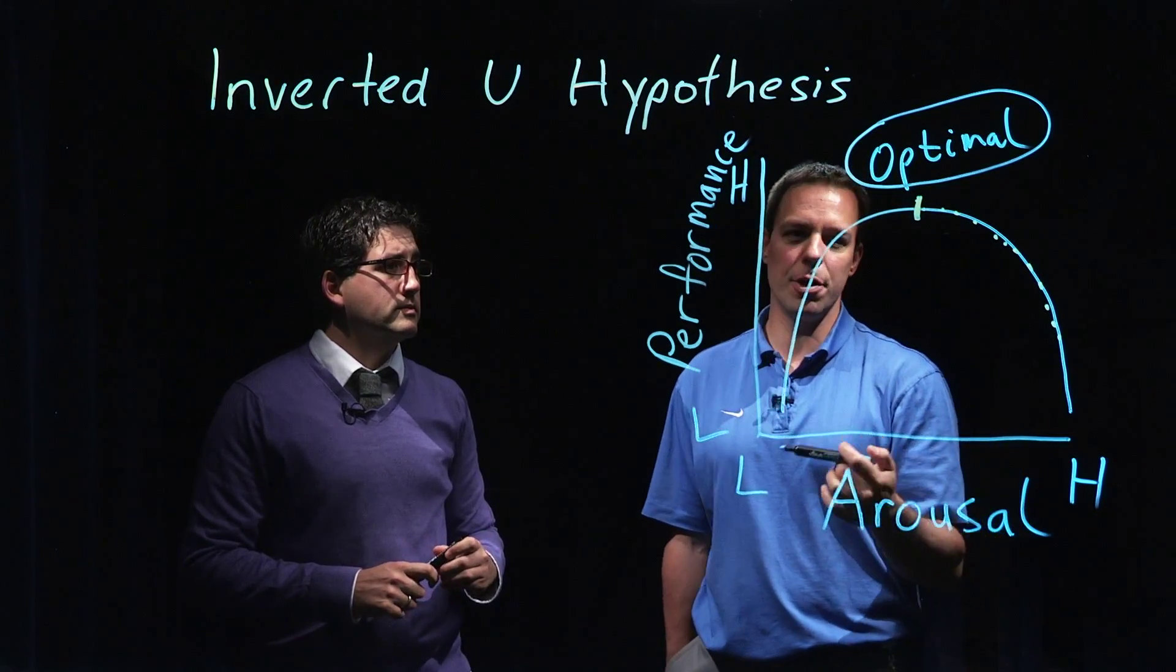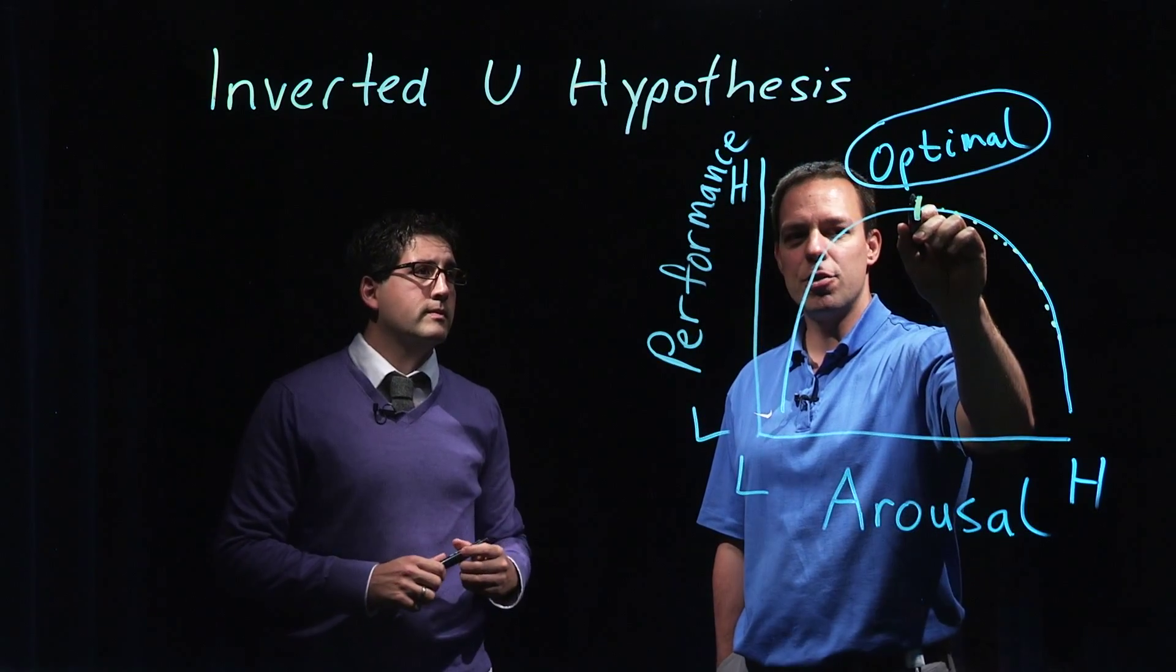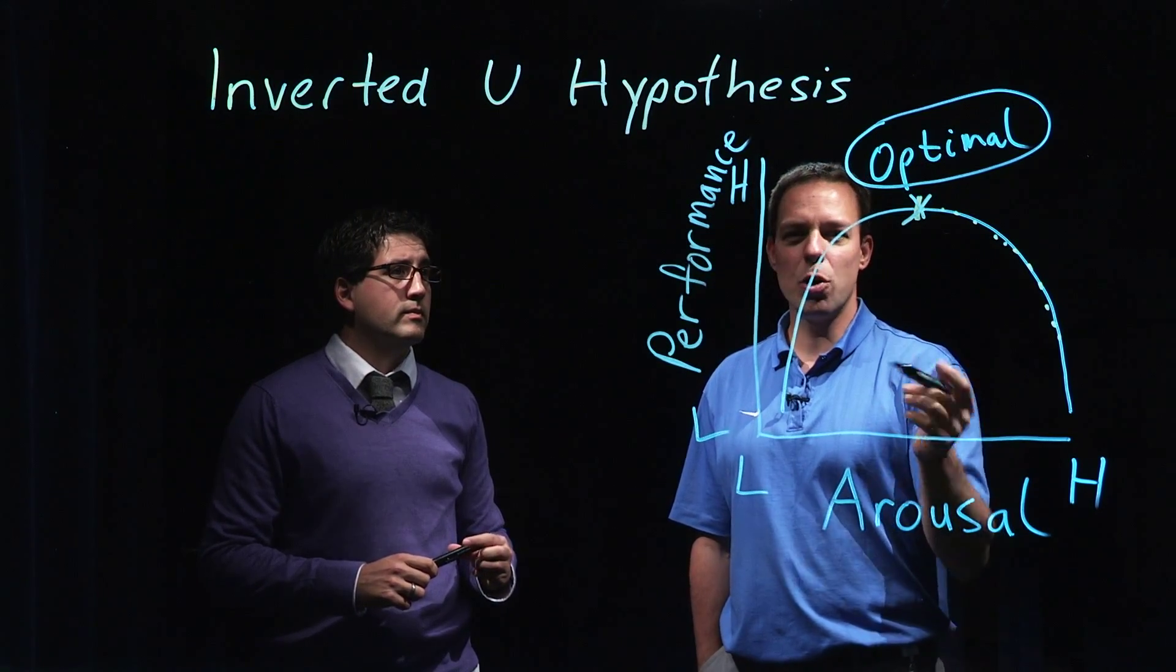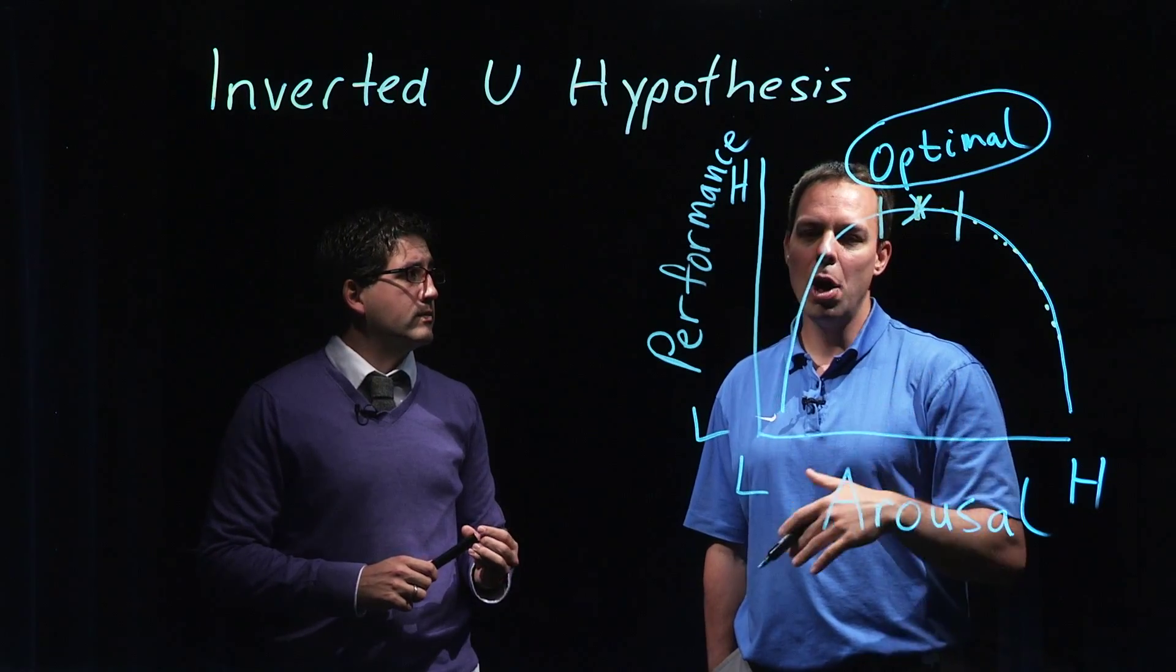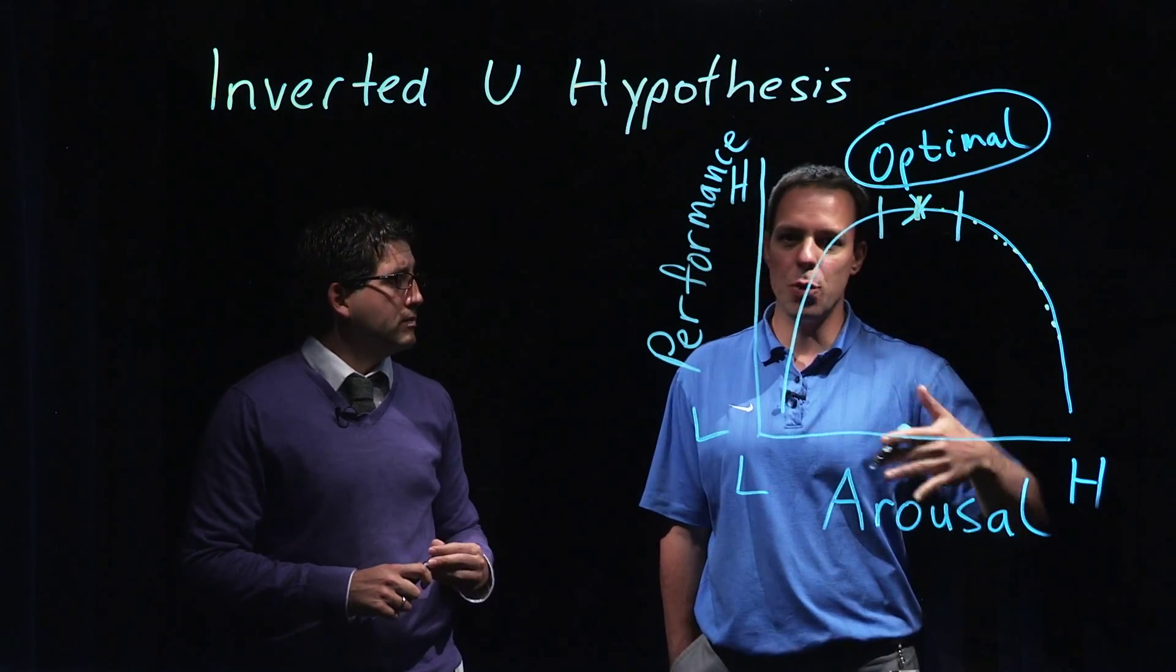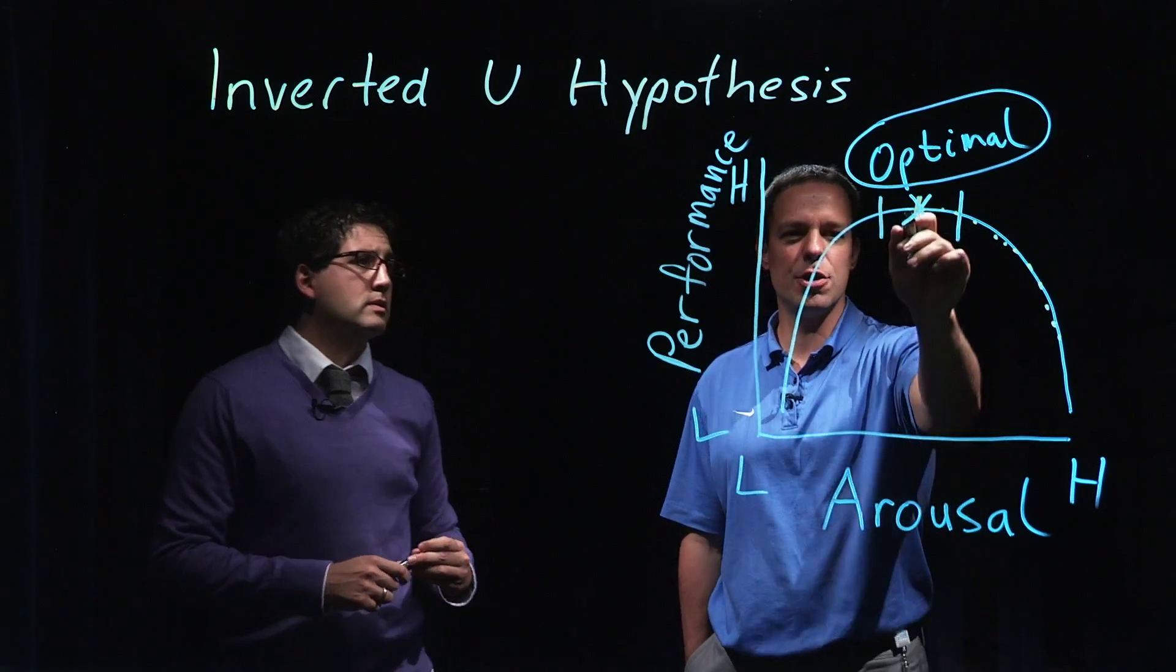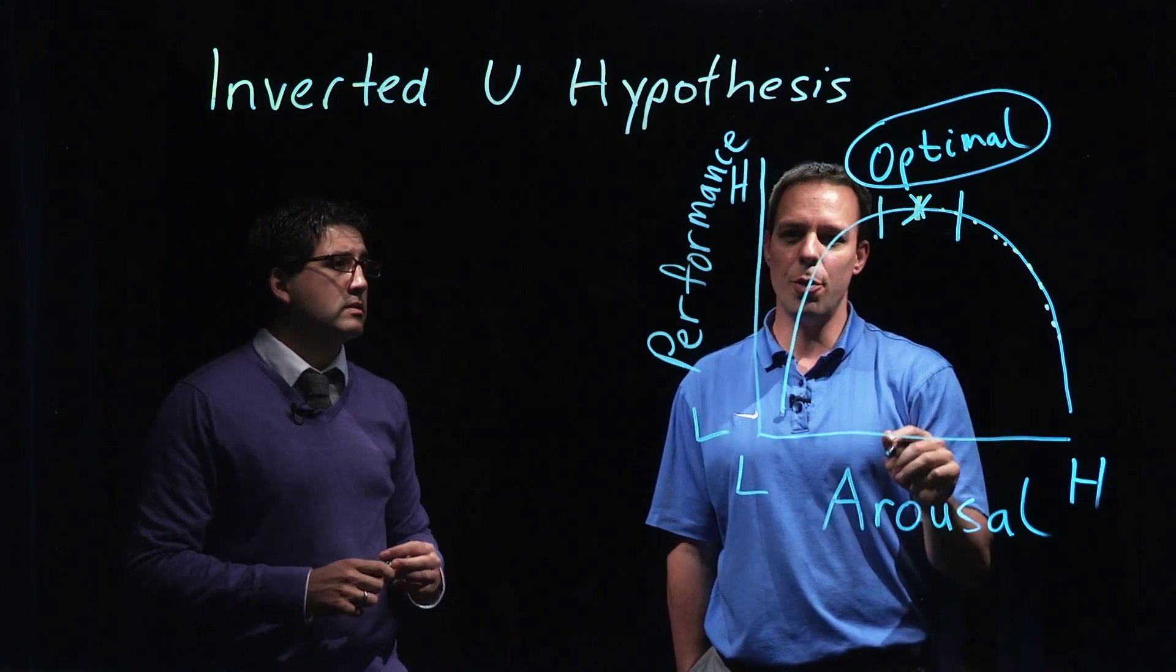And some of the problems with this inverted U hypothesis or inverted U theory are that it suggests that there's just this one point of optimal arousal. When in reality, as we'll talk about with other theories, there's more likely a range at which you perform at your best. So on a scale of 1 to 10, 1 being sleepy and 10 being really, really energized and crazy, where do you perform at your best? Probably around a 3 or a 4. Yeah, so there's a 3 or a 4. So rather than just this one point, there's a range. So we'll talk about a theory that addresses that in a little bit.